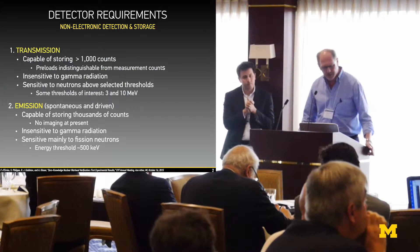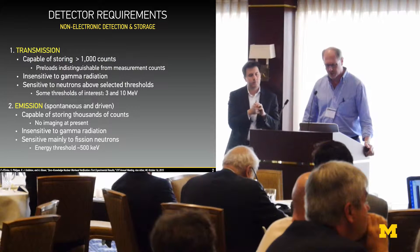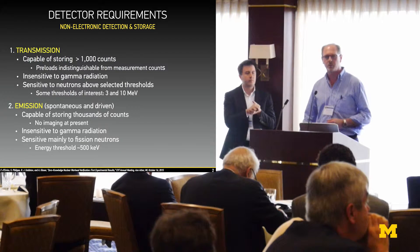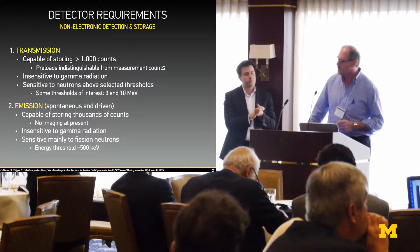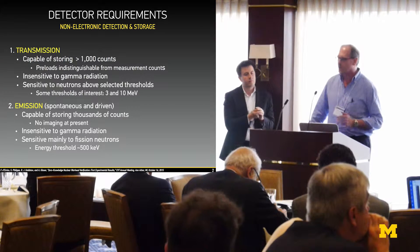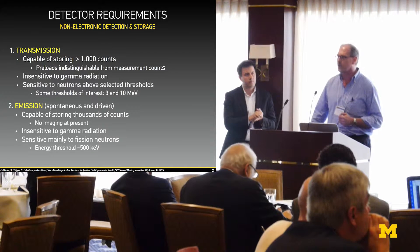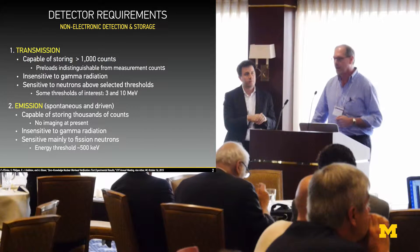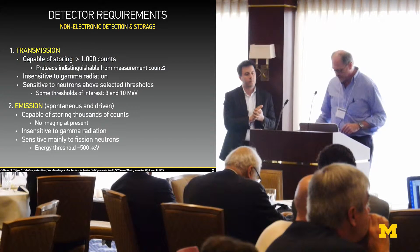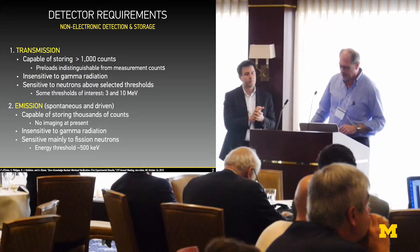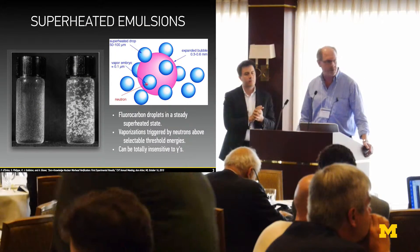The detectors should store thousands of counts, should be insensitive to gamma rays, and on the other hand sensitive to neutrons above selected thresholds. Whether used for emission studies, we want a relatively low threshold, perhaps around half an MeV, so that maybe 200 keV neutrons may be used for activation and for triggering fission. Then we have the ability of measuring a wide portion of the fission spectrum that is emitted.